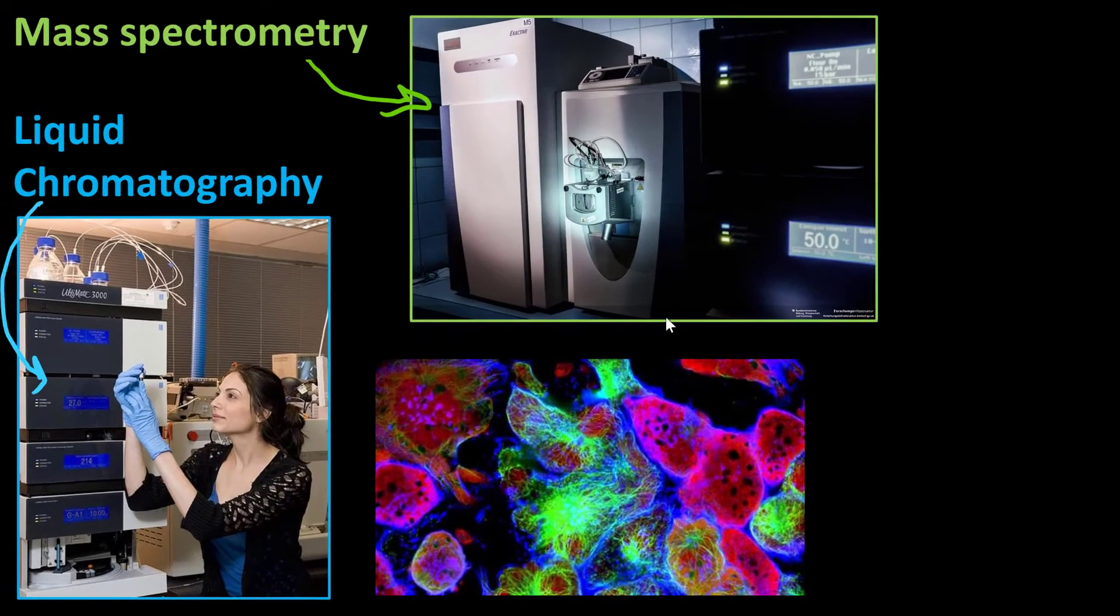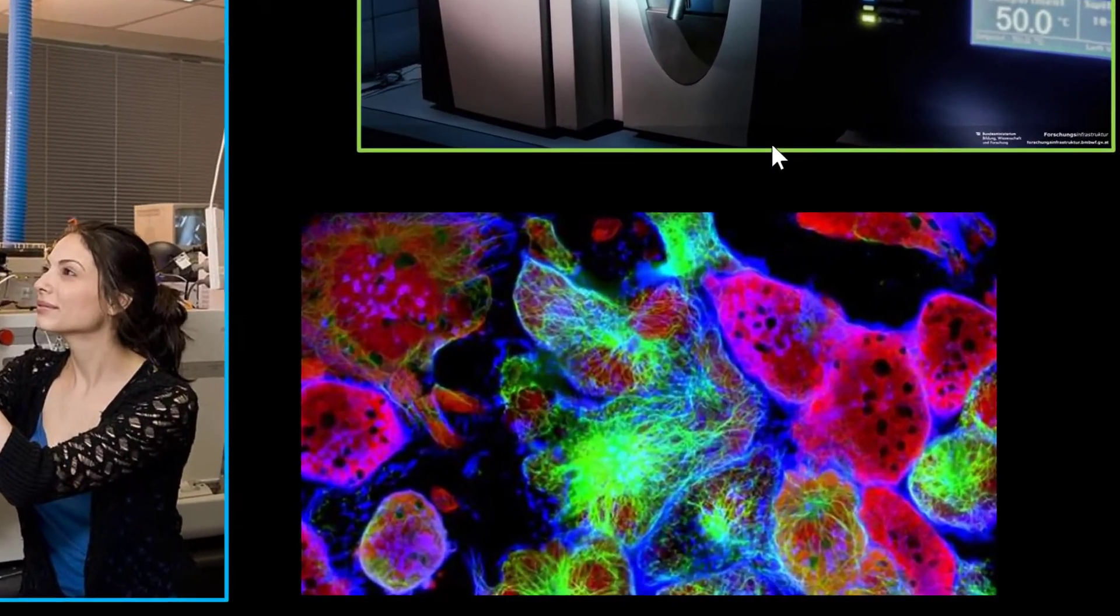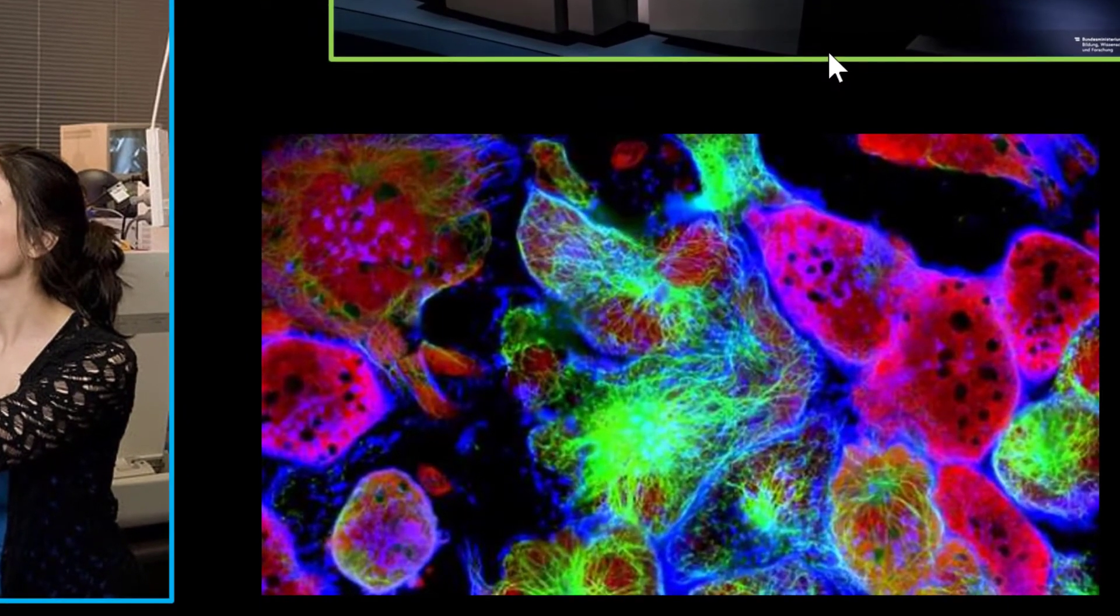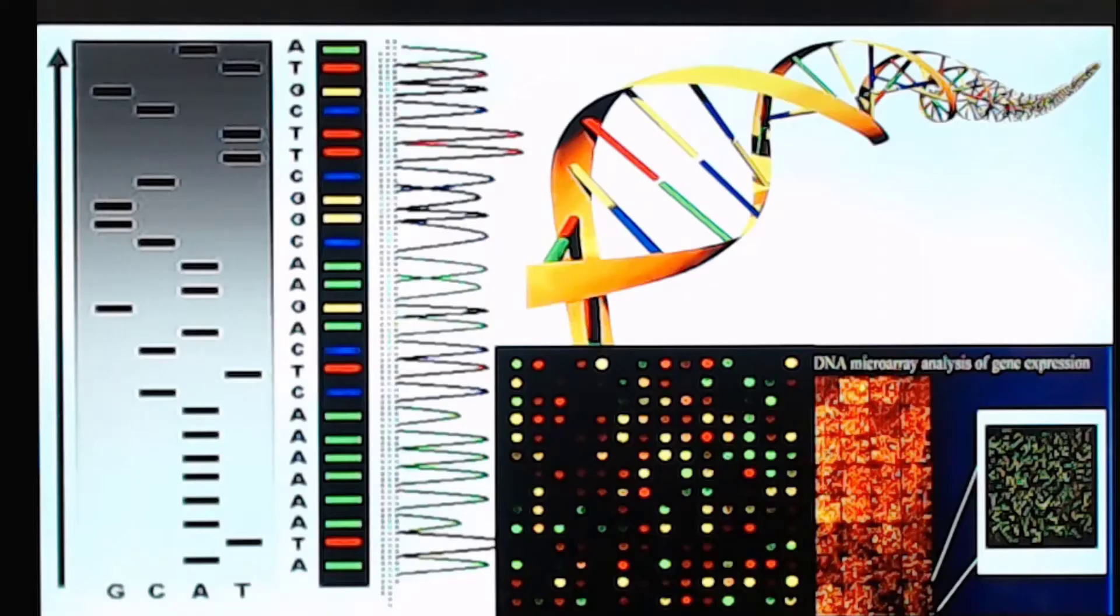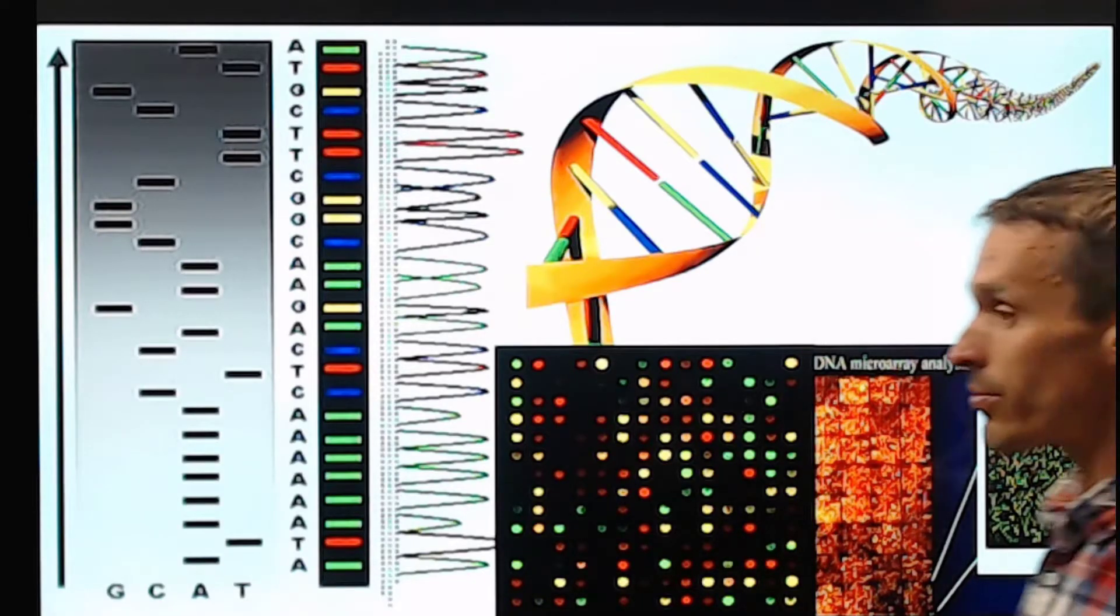I'm also particularly fond of this example here. This is a microscopic image of some cells that have been stained with different fluorescent molecules. So this is a fluorescence microscopy experiment. Fluorescence allows you to take a lot of different types of measurements to probe different kinds of molecules. And here's another example of what you can do with fluorescence.